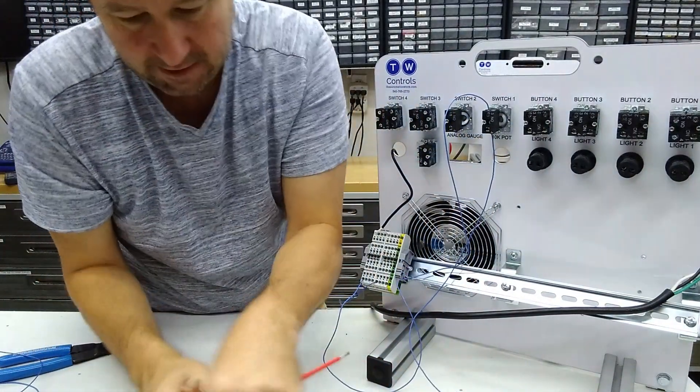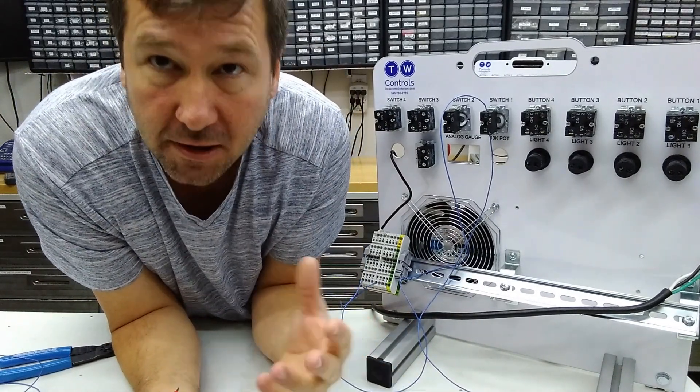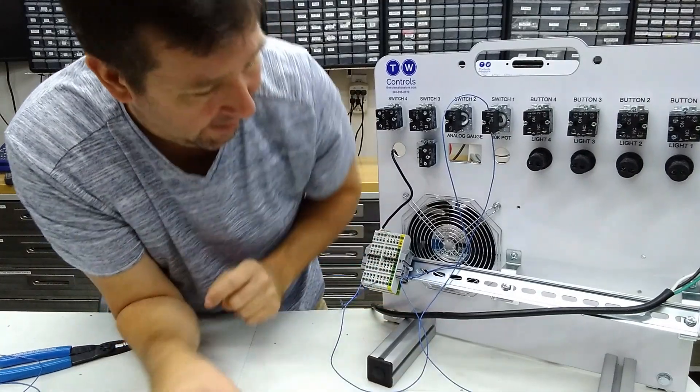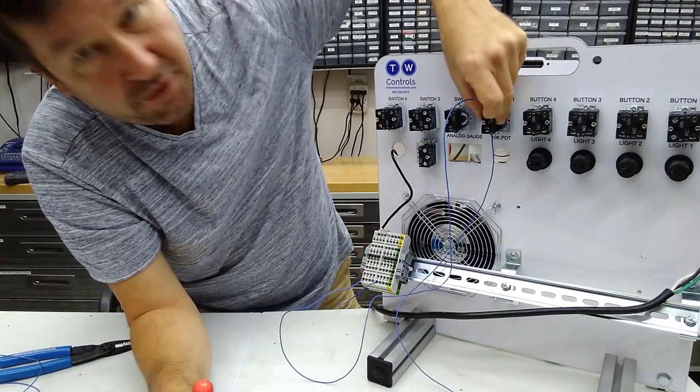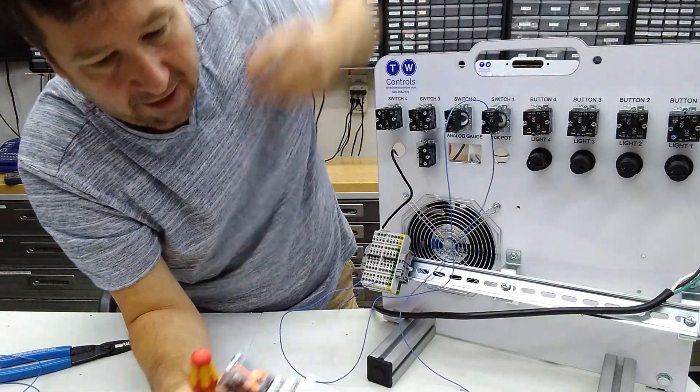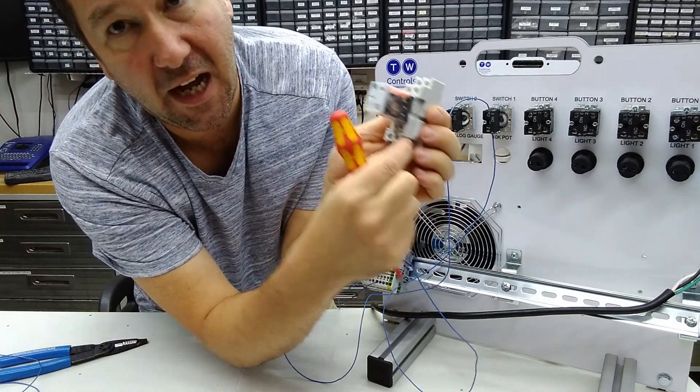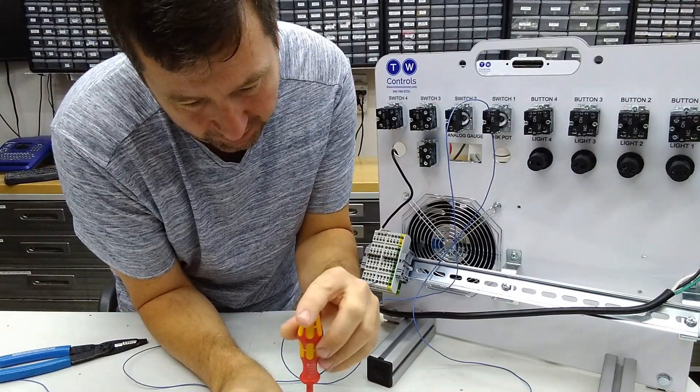So we're going to connect this wire to A2, and then in every circuit, you have to complete the loop from the plus of the power supply to the minus. So right now we have a wire coming from the plus to switch one, and we're coming out of switch one to A2. So now we need to go from the other side of our coil back to the minus of our power supply.